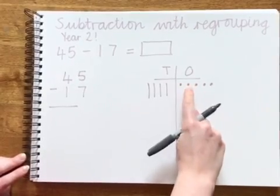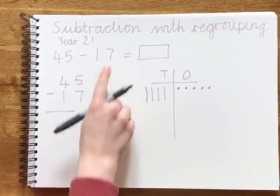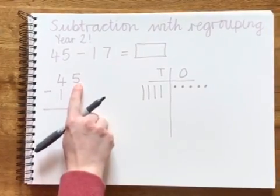1, 2, 3, 4, 5. Now I'm going to take away the 1s. So can I take away 7 from 5?